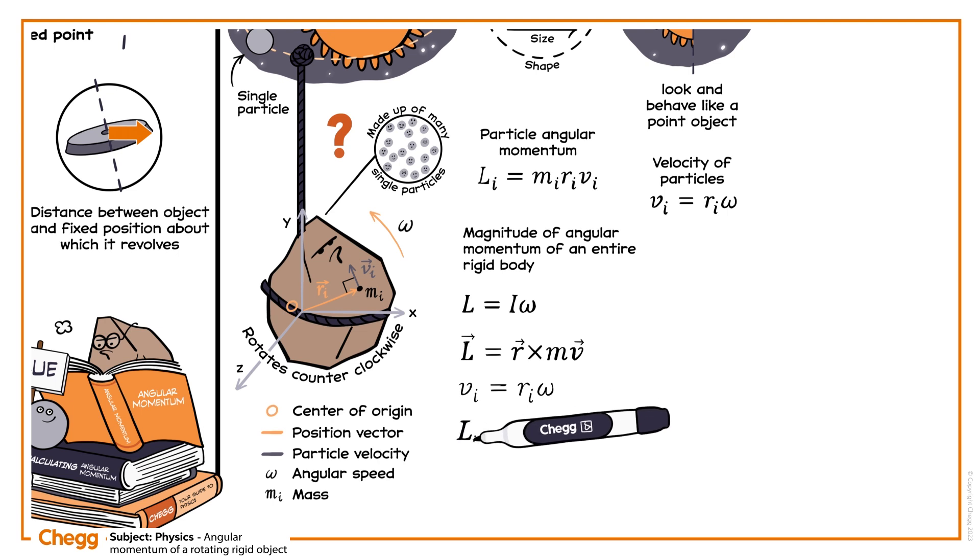Simplifying, we see that LI equals MI times RI squared times omega for any given single particle. The angular momentum of the entire object is the sum of the angular momentums of all the individual particles. Simplifying, we end up with I omega, where the sum I equals sigma MI times RI squared.